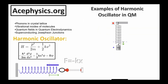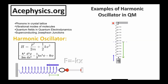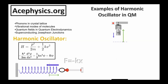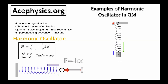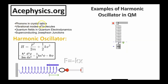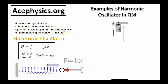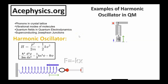Before going through the questions, I want to make a few comments about the harmonic oscillator and how often it's used in quantum mechanics. Harmonic oscillators are fundamental in physics because they model many systems — an object that experiences a restoring force proportional to its displacement from equilibrium. In quantum mechanics, the harmonic oscillator can model phonons in crystal lattices, vibrational modes of molecules, quantum fields in quantum electrodynamics, and superconducting Josephson junctions, just to name a few.